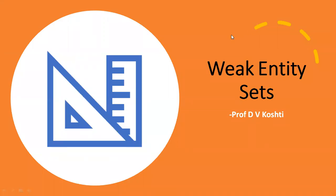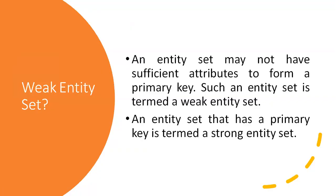Welcome students. In this lecture we are going to see what is meant by weak entity sets. A weak entity set is called weak because an entity set may not have sufficient attributes to form a primary key — such an entity is termed a weak entity set. An entity set that has a primary key is termed a strong entity set. Generally almost all entity sets are strong, but there may be some cases where we encounter weak entity sets.